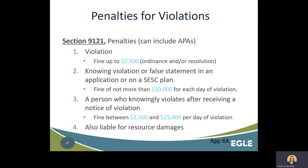These are the maximum penalties set by law. The enforcing agency may set up a fee schedule within what is defined in Part 91, but it cannot exceed it. The landowner may be fined up to $2,500 for violations of Part 91. A person who knowingly violates Part 91 or knowingly makes a false statement in a permit application or SCSC plan is responsible for a fine of not more than $10,000 for each day of violation. A person who knowingly violates Part 91 after receiving a notice of violation is responsible for a fine of between $2,500 and $25,000 for each day of violation, and is also liable to the state for damages for injury to, destruction of, or loss of natural resources resulting from the violation.